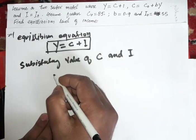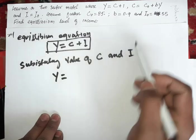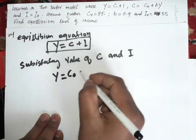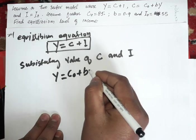So I will write Y equals C0 plus B times Y plus I0.